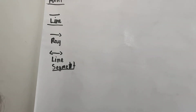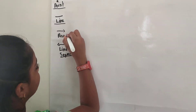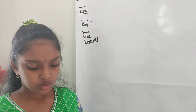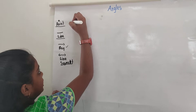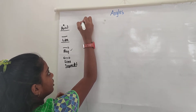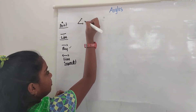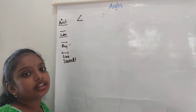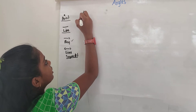Now, for angles, we need the ray. First, what is an angle? An angle is nothing but where two rays meet at a point. It is known as an angle.